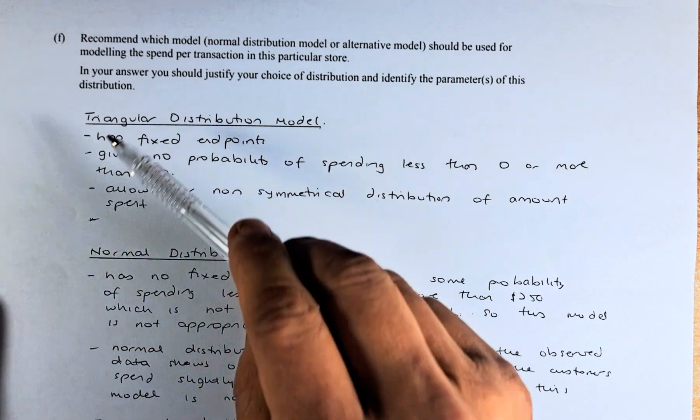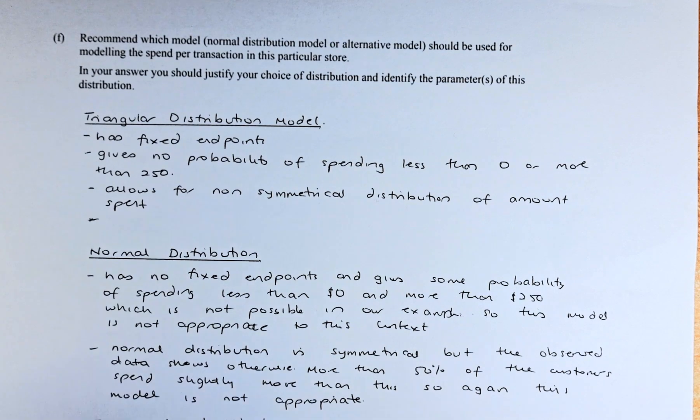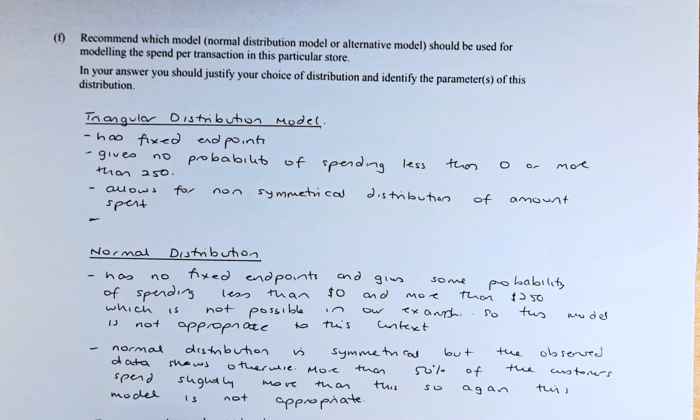We will decide to do triangular distribution because in a triangular distribution, there's no fixed endpoint. So they do not give the probability that's less than 0 and more than 250.